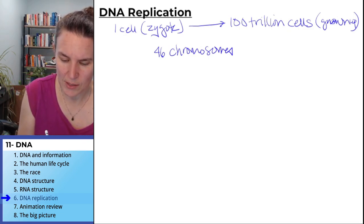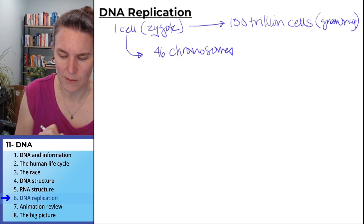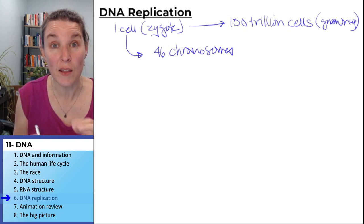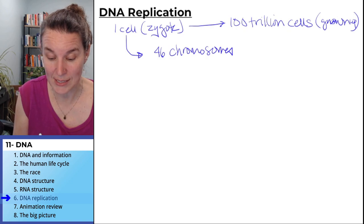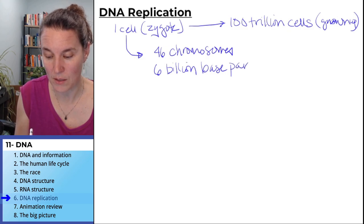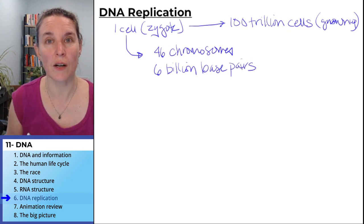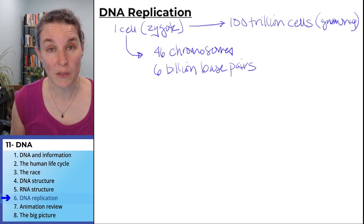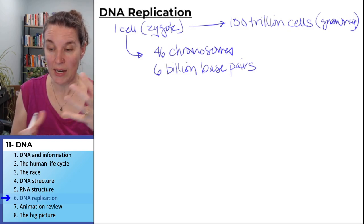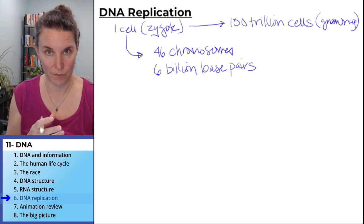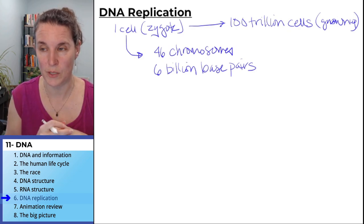This is what's in one cell. The amount of DNA in there is 6 billion base pairs. Oh my lord, are you kidding me? 6 billion base pairs divided up in those various chromosomes.